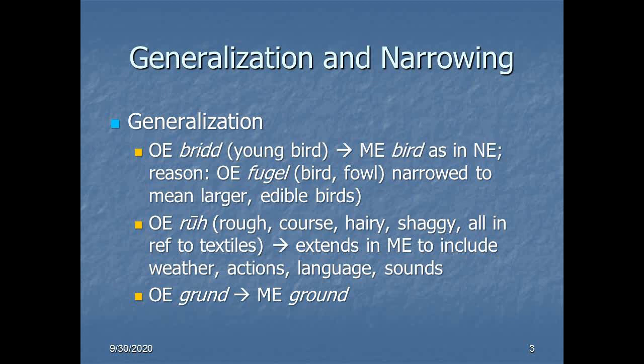For example, Old English 'grund,' which becomes 'ground' in Middle English and Modern English, meant something very different in Old English than it does now. When Middle English speakers spoke about 'ground,' they would have been speaking of that stuff we walk on. But in Old English, 'grund' referred specifically to the ground at the bottom of a body of water — the bottom of a pond, for example. In fact, it's hypothesized that 'grund' is a possible etymology for the name of Grendel, the monster in Beowulf, who emerges from both a subterranean and submarine environment.